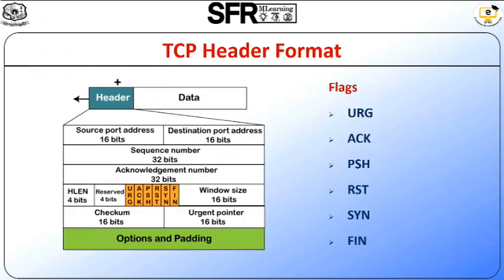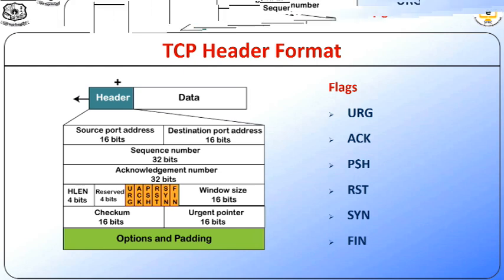These are all the flags present in the TCP header. The first flag is URG, which represents the urgent pointer; if it is set, the data is processed urgently. The next flag is ACK; if ACK is set to 0, it means the data packet does not contain an acknowledgement. The next flag is PSH; if this field is set, it requires the receiving device to push the data to the receiving application without buffering it. The next flag is RST; if it is set, it requires restarting a connection. The next flag is SYN, which is used to establish a connection between hosts. The last flag is FIN, which is used to release a connection and no further data exchange will happen. These are all the flags present in the TCP header format.